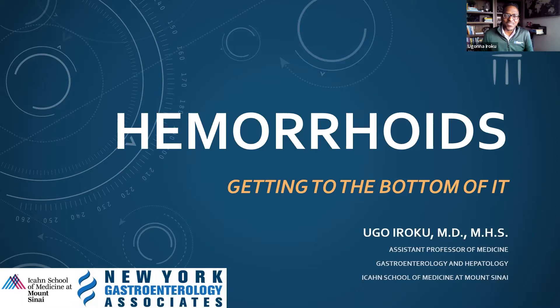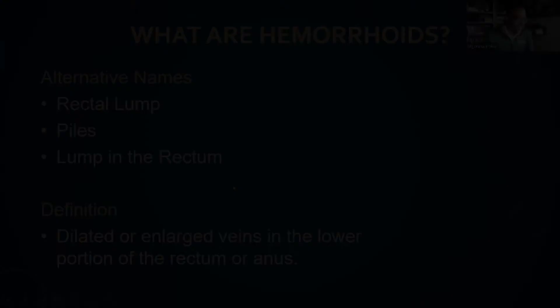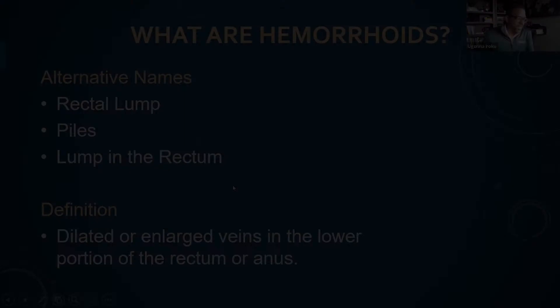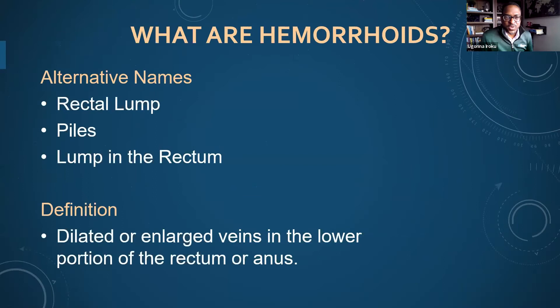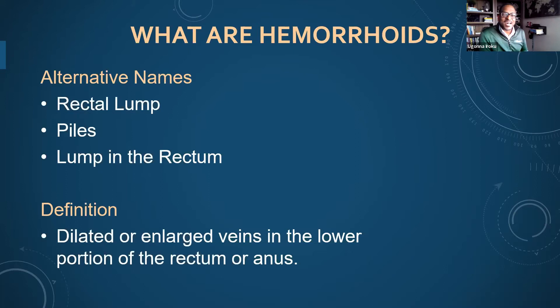So we're going to get started. To start off with, we're going to ask the question and hopefully answer sufficiently: what are hemorrhoids? They go by a number of names depending on what part of the country you come from. Sometimes they're called rectal lumps, sometimes they're called piles, and you can feel them as lumps in the rectum. The formal definition is the dilation and enlarged veins in the lower portion of the rectum or anus. This diagram helps to give you a view of what hemorrhoids look like up close.